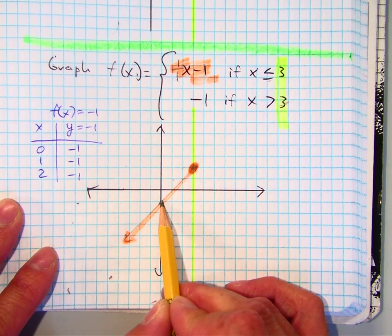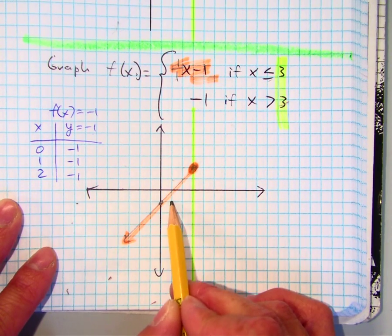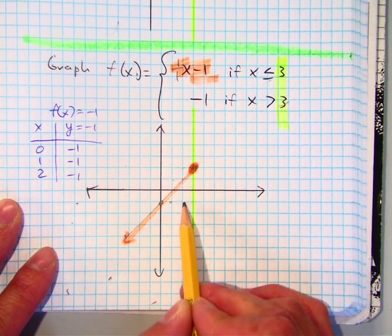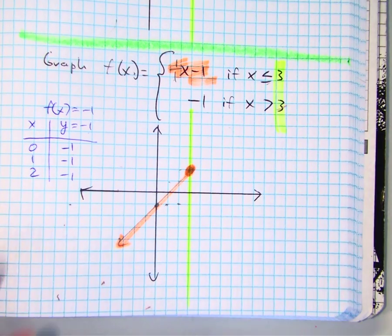0, negative 1. 1, negative 1. 2, negative 1. What type of line do you have, class?